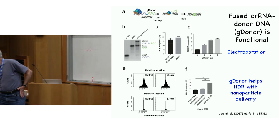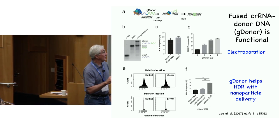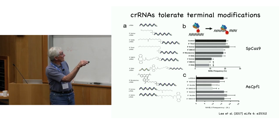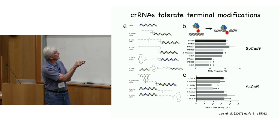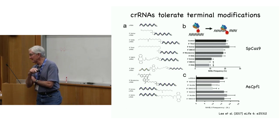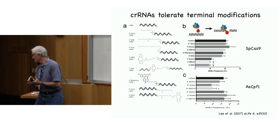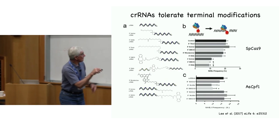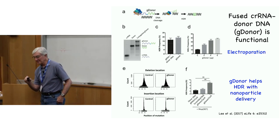A subtle point: HDR is traditionally thought of as DNA-mediated. Here, the construct is single-stranded DNA linked to the RNA — the RNA is bound to Cas9, there's a chemical linker, and then single-stranded DNA. They use the same single-stranded DNA either linked or unlinked. If you make the linked DNA on the G-donor a scrambled sequence, it doesn't help — so the effect is sequence specific.